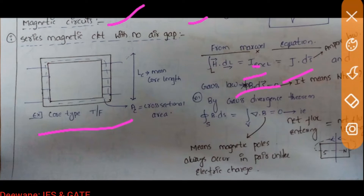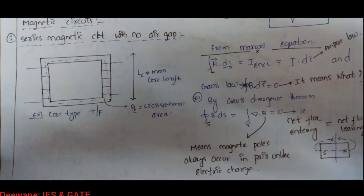From Gauss's law, the double integration of B·ds equals zero, meaning divergence is zero. The divergence of the magnetic field is zero because the magnetic field always rotates in a closed path. If you take a closed path, the flux coming in equals the flux leaving, so the net value — divergence — is zero.